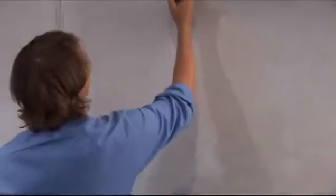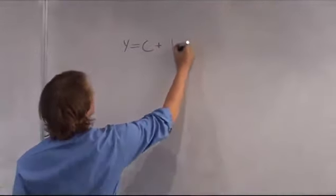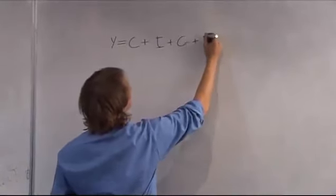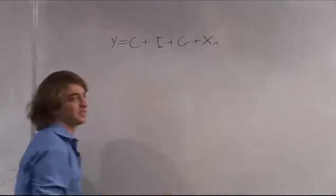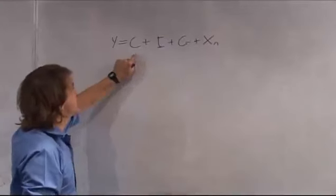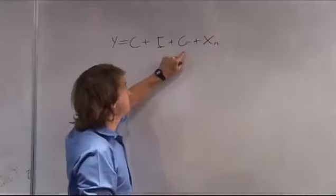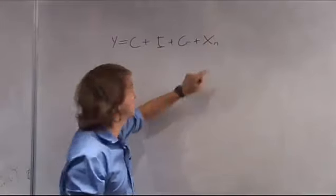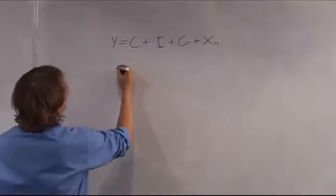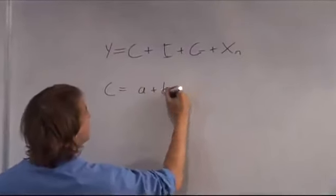Let's have a look at our aggregate expenditure model. Y is equal to C plus I plus G plus XN. Output, or GDP, is equal to personal consumption plus gross private investment plus government expenditure plus net exports. Now we know that C is equal to a plus bY.